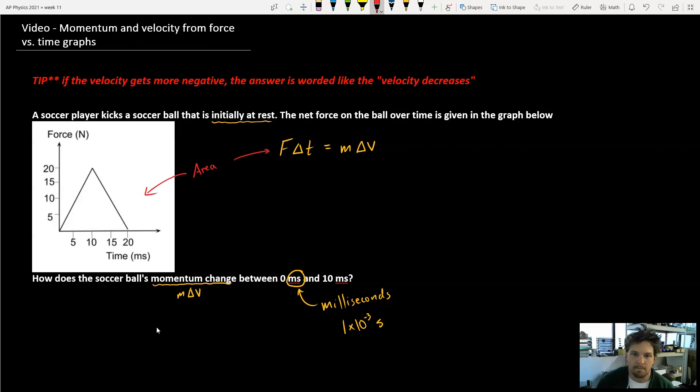So between zero and 10 milliseconds, notice this is in milliseconds down there, zero and 10. And then I'm going to find this area in there. So that's a base of 10 and a height of 20. So that's a triangle. So one half base times height.